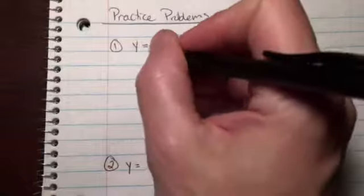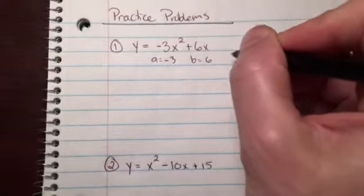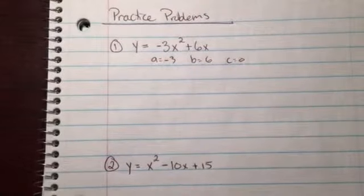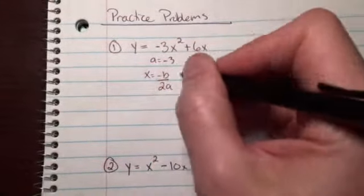Okay, so here we go. For problem 1: a = -3, b = 6, c = 0. We use opposite of b over 2a. Opposite of b over 2a...